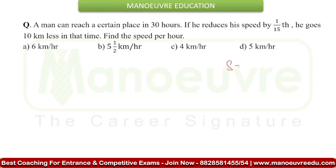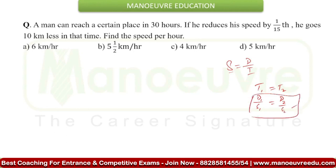You know the relation between speed, distance and time — speed is equal to distance upon time. Speed and time are inversely proportional to each other. If you have two different conditions where time is the same, then the ratio between distance and speed: D1 upon S1 is equal to D2 upon S2. This condition can be used to solve this question.